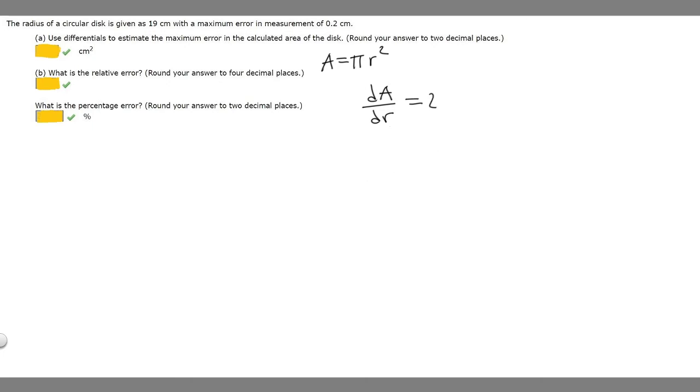To get dA by itself, we multiply both sides by dr. So dA equals 2πr dr. Now we plug in r, which is 19, and dr is our maximum error in measurement, which is 0.2.